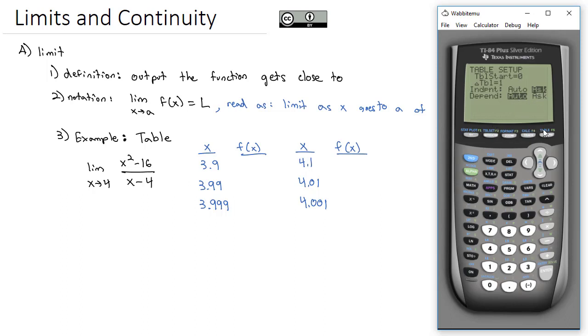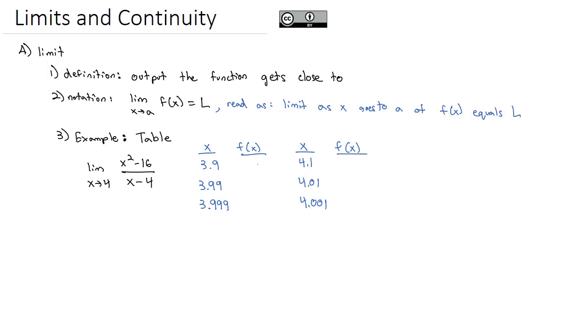Since my ask is highlighted, I'm going to go to my table with second table. Now in x, I can enter in my x values of 3.9, 3.99, and 3.999. Notice the answers I got are 7.9, 7.99, and 7.999.